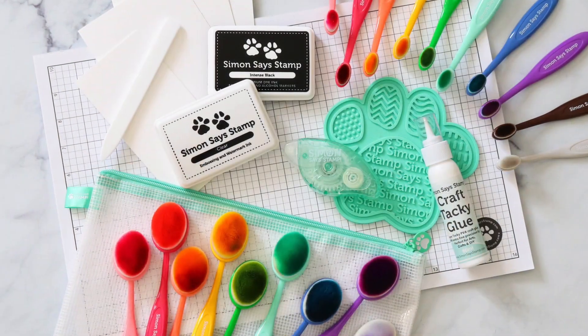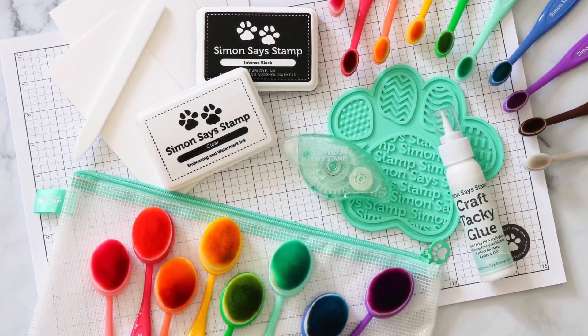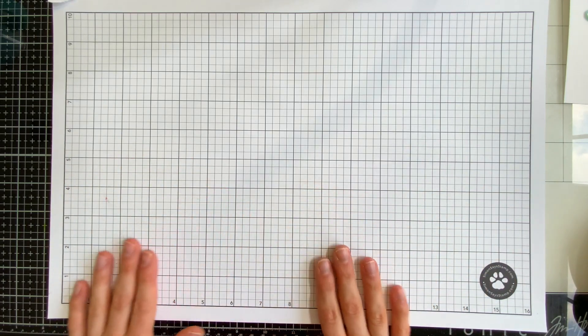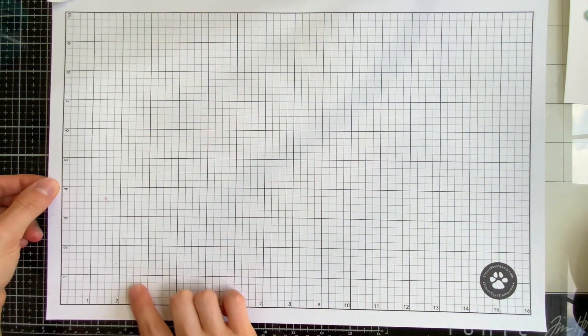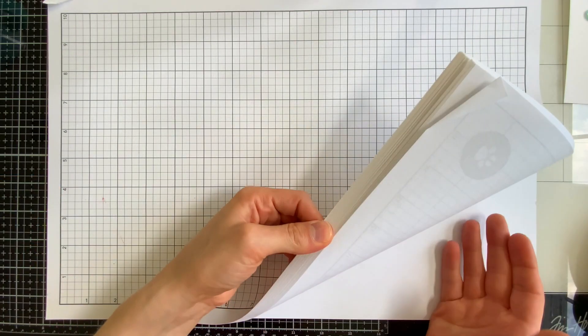No matter what project you're working on it always helps to have a surface to protect your table with. Our Simon exclusive grid mat is large and it gives you plenty of workable space. The whole pad measures 11 by 17 inches. There are 50 sheets in a pad.